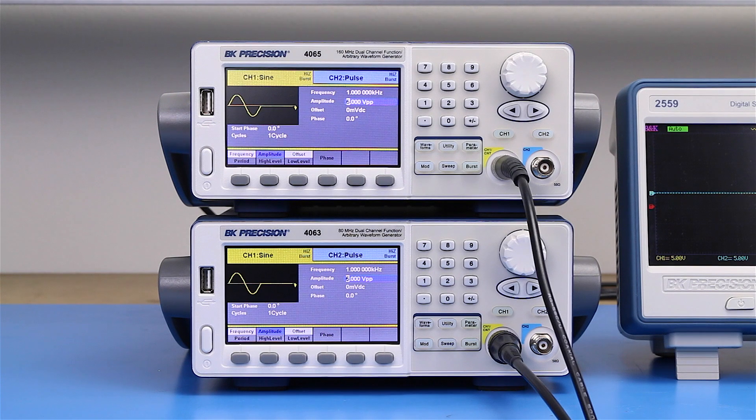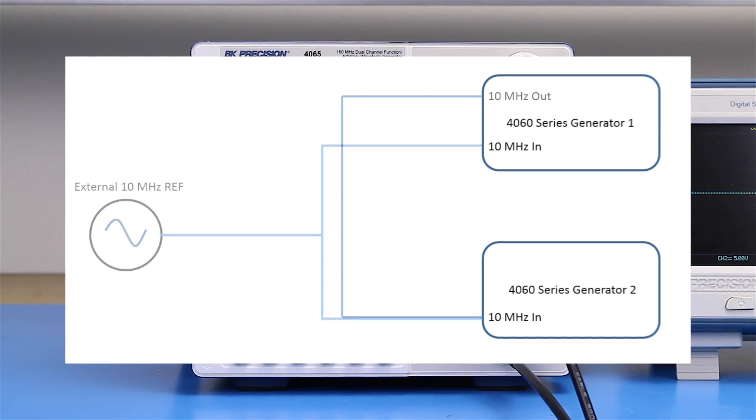First, set up your function generators to use a master timebase. This source could be from an external precision oscillator or distributed from one of the generator's own timebase.